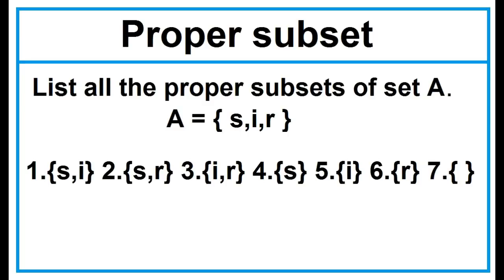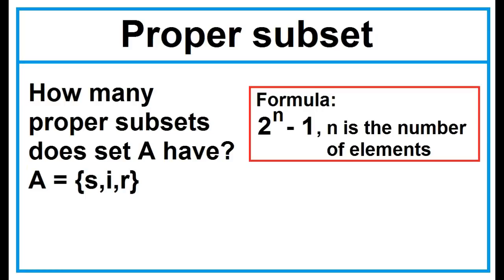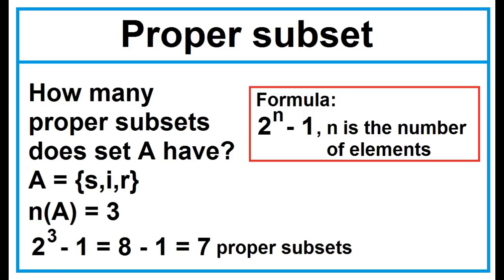Sets 1, 2, 3 have 2 elements. Sets 4, 5, 6 have 1 element. And number 7 is an empty set. The set itself is not a proper subset of Set A. The formula for proper subsets is 2 to the power of N minus 1, where N is the number of elements. The cardinality of Set A is 3, so 2³ − 1 = 8 − 1 = 7.